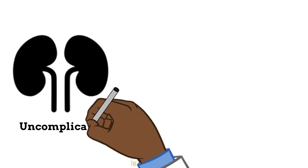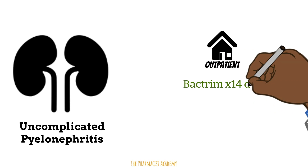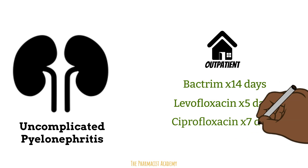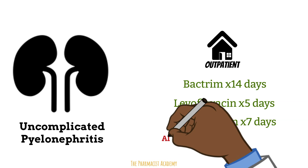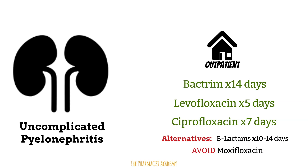Uncomplicated pyelonephritis is more serious than uncomplicated cystitis. Although we still treat in the outpatient setting, treatment durations are longer — bringing out the bigger guns. Options include Bactrim for 14 days, levofloxacin for five days, or ciprofloxacin for seven days. Alternatives include beta-lactams for 10 to 14 days. Notably, moxifloxacin should be avoided because it does not concentrate adequately in the urinary tract.